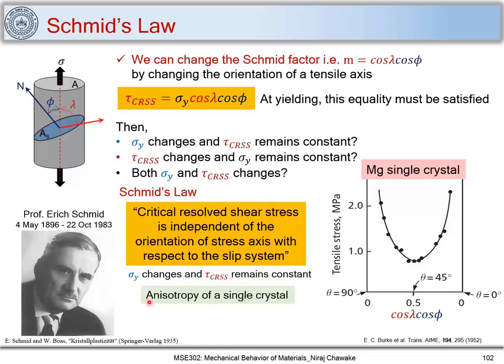This can be compared to the anisotropy of a single crystal — if we change the orientation, the yield strength changes. However, tau_CRSS, the critical resolved shear stress that causes slip to occur on the slip plane along a particular slip direction, remains constant even as cos(phi), cos(lambda), and the Schmid factor change.